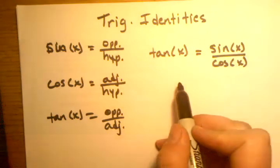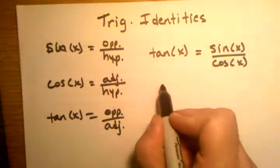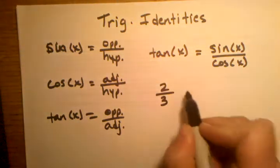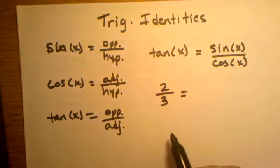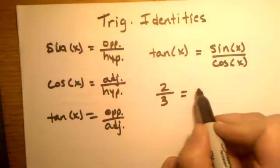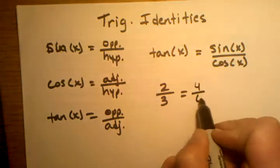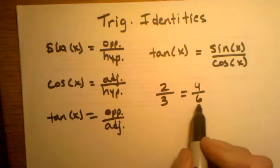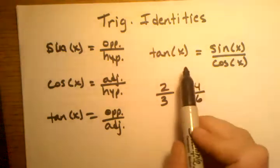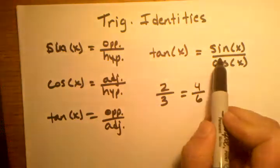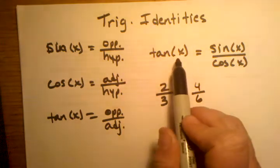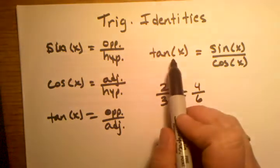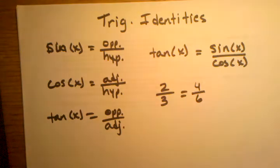That sounds a little weird, but basically it's the same idea as in algebra. If we were to say the fraction two-thirds, its equivalent fraction could be four-sixths — it's just two different ways to write the same value. The same is true with trig functions. There are all kinds of different ways you can write the same value in terms of trig functions, and I'm going to show you how that works.